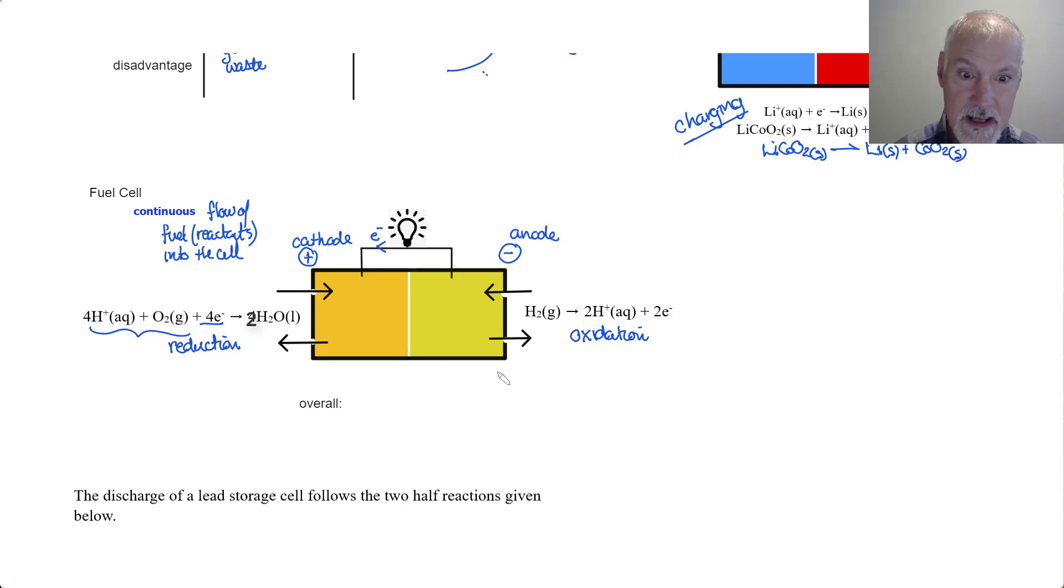Putting these two together, what do we get for the overall reaction? Well, four electrons here, two here. I'm going to need to double this particular reaction before I add it together. And let's look at what happens when we do that. We end up with two hydrogen gas plus oxygen O2 gas to H2O. And that would be a liquid.